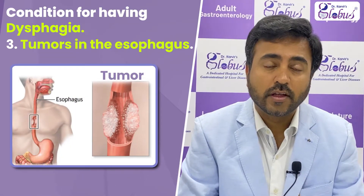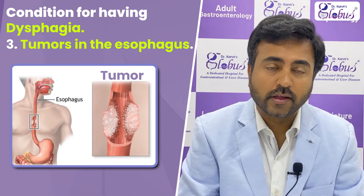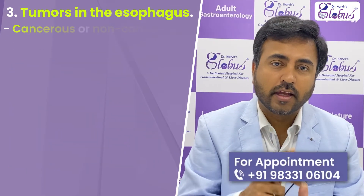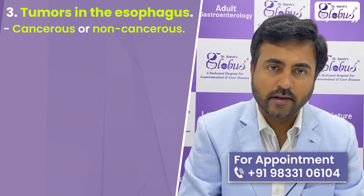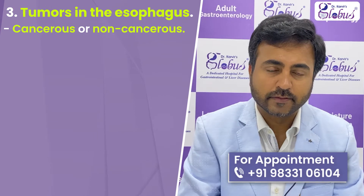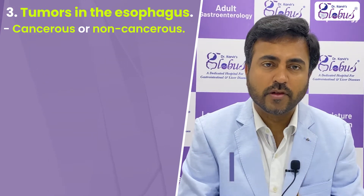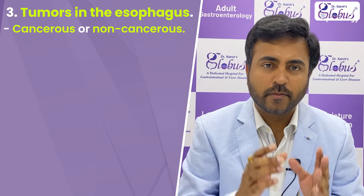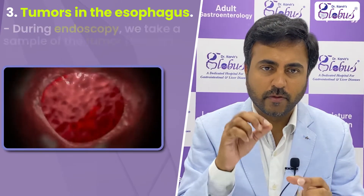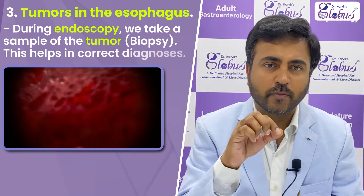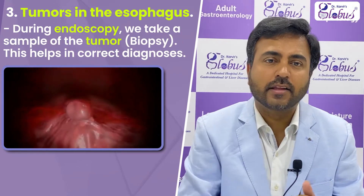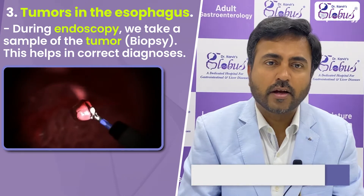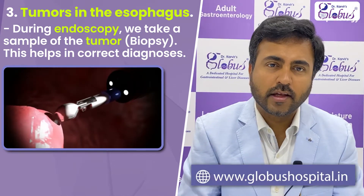Moving to the third point: tumors. Tumors in the esophagus can be of two types — sometimes cancerous, and sometimes non-cancerous. We see more cancerous tumors in the esophagus. When we identify these tumors, we take endoscopy samples, which we call a biopsy, and the condition can be diagnosed in the right way.